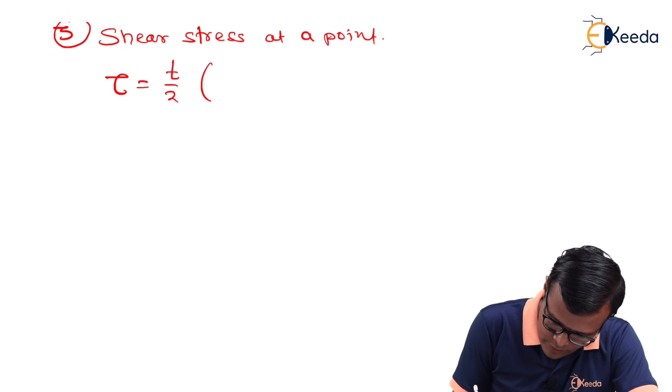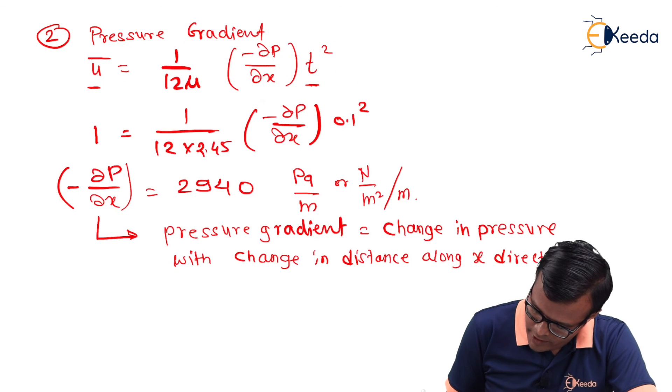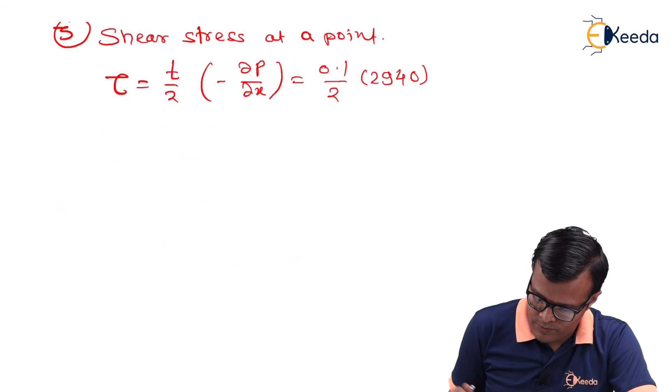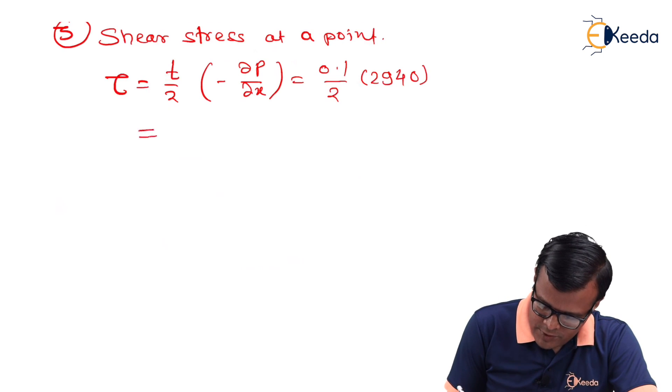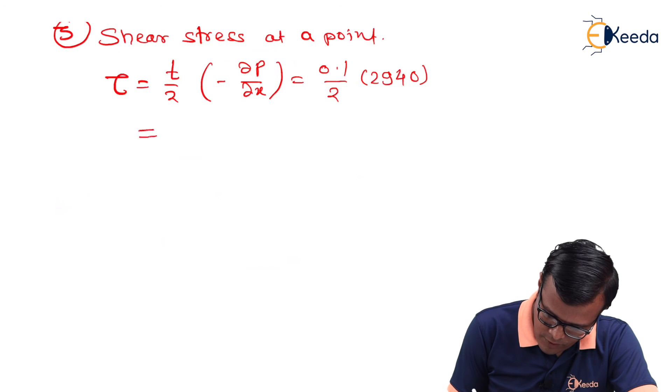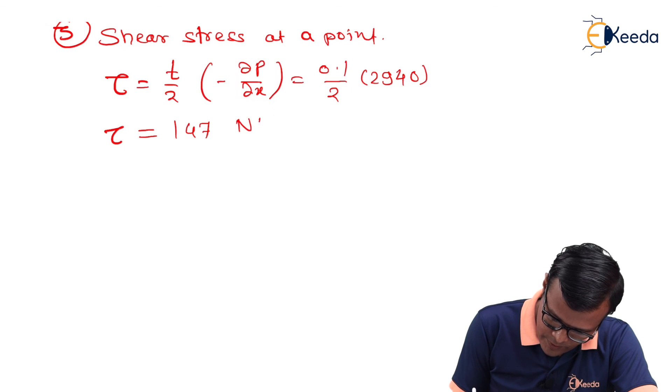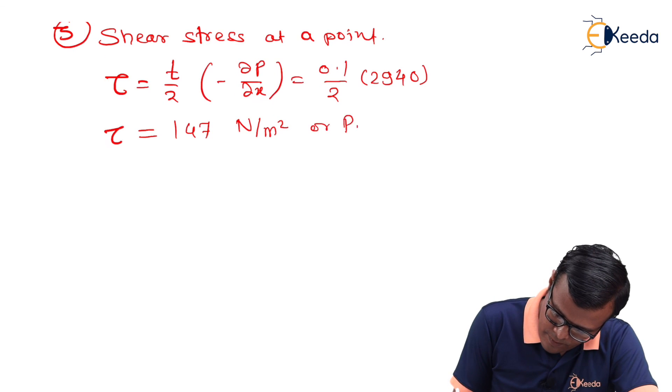We can calculate next term that is shear stress at a point. τ is equal to t/2 × (-dp/dx). So, it is 0.1/2 × 2940. We have already calculated this value 2940. So, calculations become reduced. So, we will have value of τ as 147 Newton per meter square or Pascal.